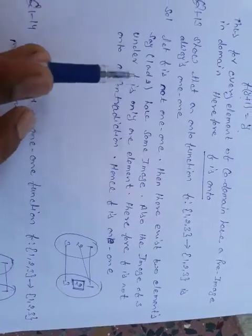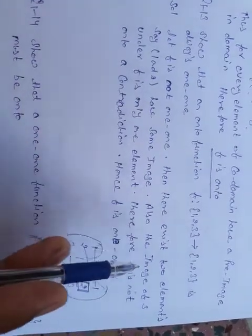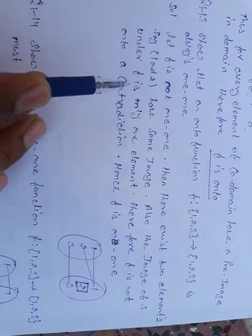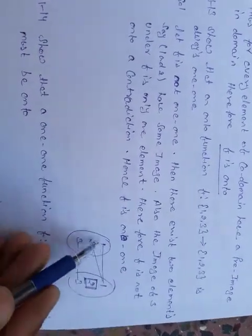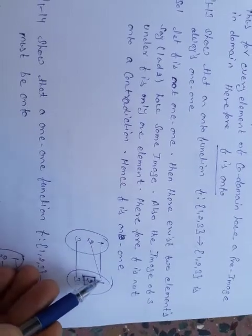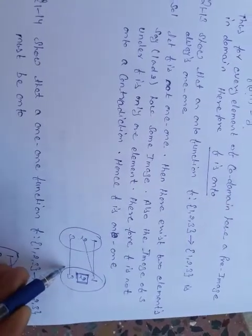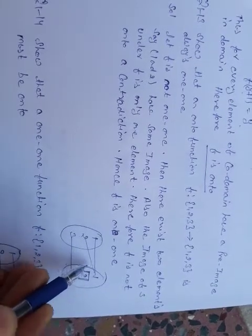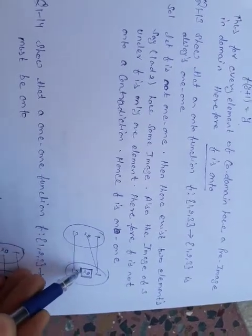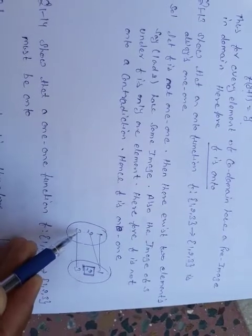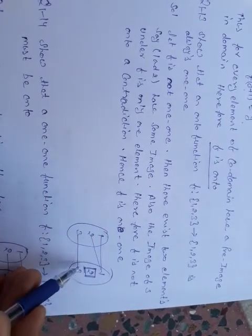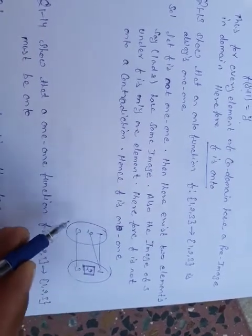Let 1 and 2 have the same image, say image 1. The image of 3 is always one element — let's say 3. Now observe that element 2 in the co-domain has no pre-image at all. For an onto function, every element of the co-domain must have a pre-image, so this function is not onto.